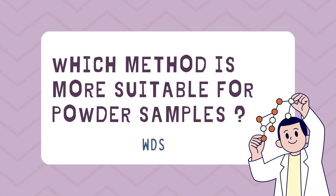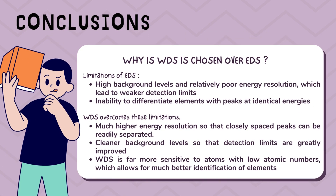Wavelength dispersive spectroscopy is the more suitable method for powder samples. EDS has high background levels and poor energy resolution, leading to weaker detection limits and an inability to differentiate elements with peaks at identical energies. WDS has higher energy resolution, cleaner background levels, and is far more sensitive to atoms with low atomic numbers, providing better detection of elements than EDS.